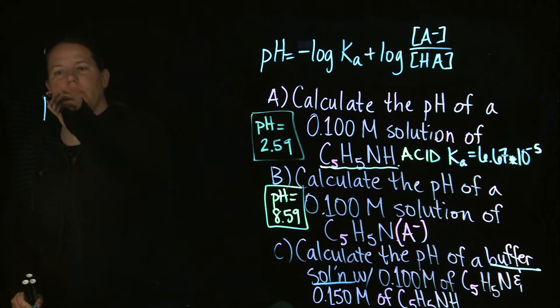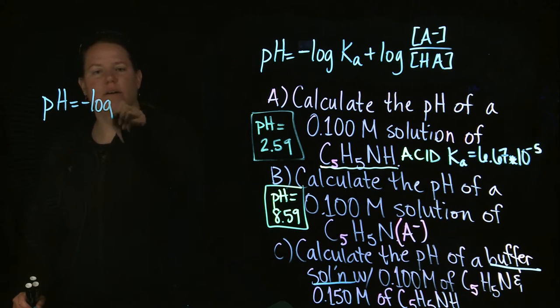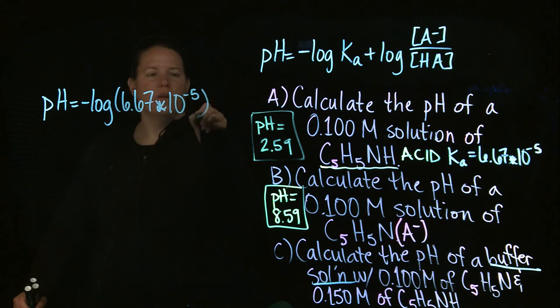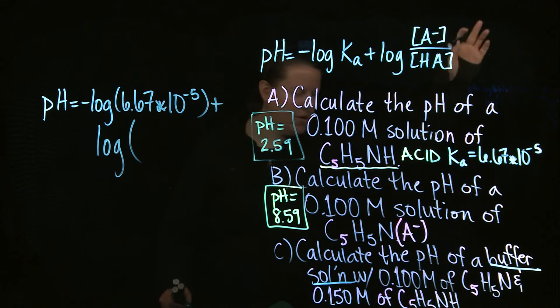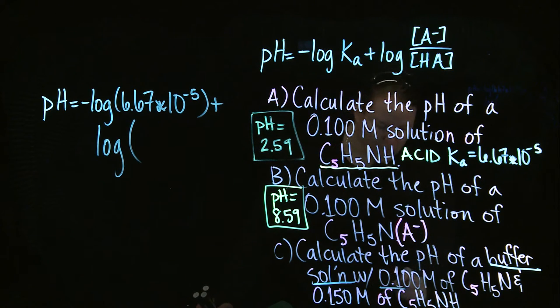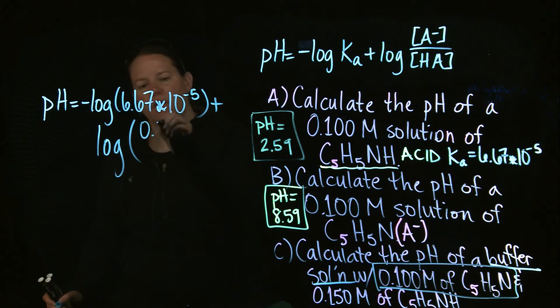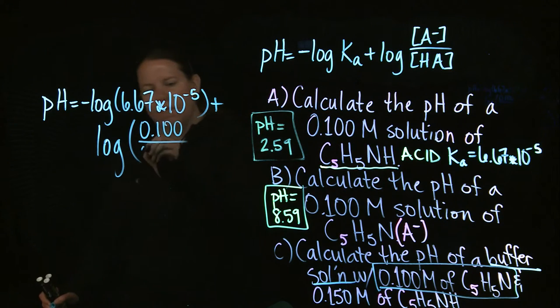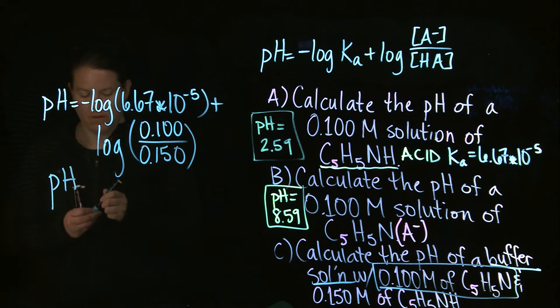So in terms of this, pH equals negative log of Ka, the negative log of 6.67 times 10 to the negative fifth, plus the log of the concentration of the base. You have to figure out which one is the base. We know that pyridine, we already said was the base. So that's going to be 0.1. And then the acid was 0.15, because that was the protonated version of pyridine. And then I just plug this into my calculator. Life is pretty good.